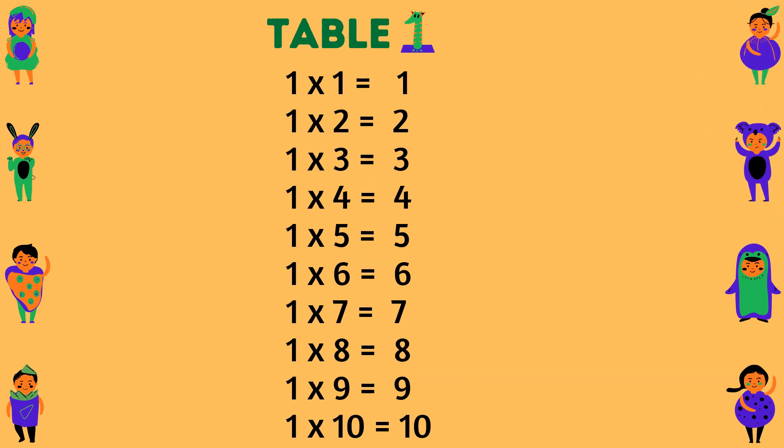Table of 1. 1 times 1 equals 1. 1 times 2 equals 2. 1 times 3 equals 3. 1 times 4 equals 4. 1 times 5 equals 5. 1 times 6 equals 6. 1 times 7 equals 7. 1 times 8 equals 8. 1 times 9 equals 9. 1 times 10 equals 10.